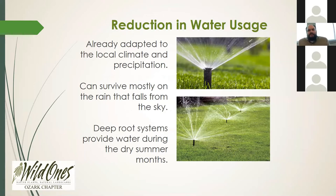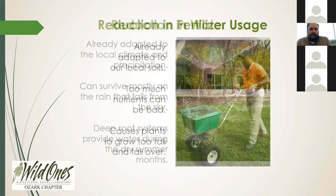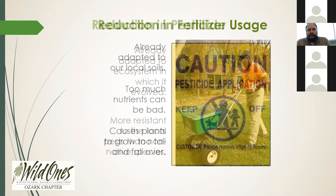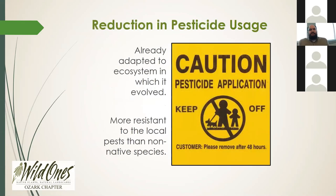These plants can survive mostly on the rain that falls from the sky, and their deep root systems can often help them make it through those dry summer months. They're also adapted to our local soils, which are pretty poor in nutrients. Adding fertilizer can actually be detrimental to a native plant and cause it to grow too fast, too tall, and fall over — what's called lodging. And because they're already adapted to our local ecosystem, they're more resistant to local pests than many non-native species, so we can really reduce the amount of pesticide, fertilizer, and water we use.